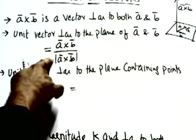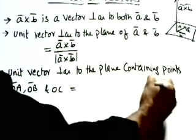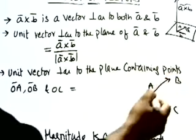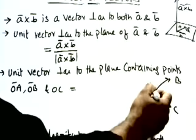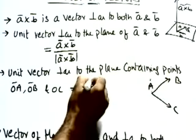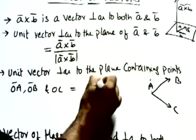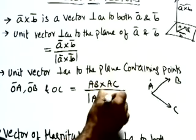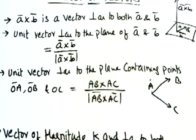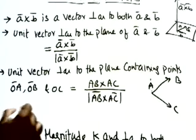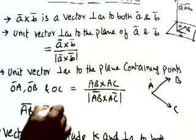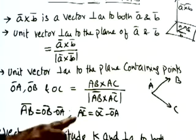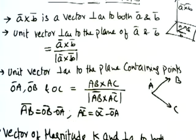Unit vector means magnitude one, so we divide by the magnitude to get one. If asked for a vector of magnitude six perpendicular to a and b, we multiply the unit vector by six. Magnitude k means k times the unit vector (a×b)/|a×b|. When points are given, find ab = ob − oa and ac = oc − oa first.